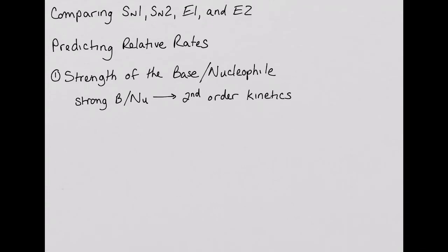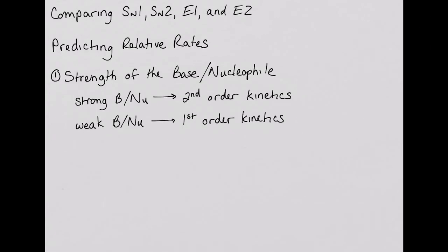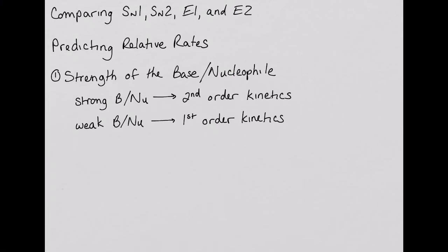If the base or nucleophile is weak, this will mean that most likely the mechanism will be first-order, either E1 or SN1, or perhaps a mixture of both. This is not because a weak base or nucleophile promotes a first-order reaction, but rather that it slows the second-order mechanisms so much that the first-order become faster than the second-order, meaning that E1 or SN1 will likely predominate.